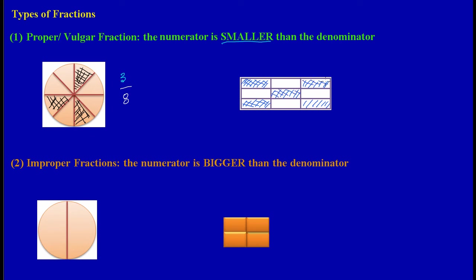We have shaded one, two, three, four, five parts out of a total of nine parts. The total number of parts — nine — goes in our denominator, because the denominator states how many parts there are in the whole, while the numerator tells us how many parts we're speaking about. In this case we're speaking about five parts, and it's really that easy when representing proper fractions on diagrams.